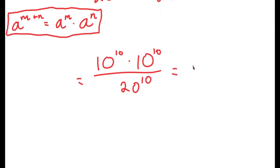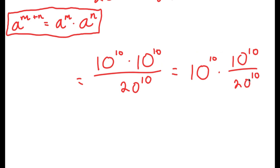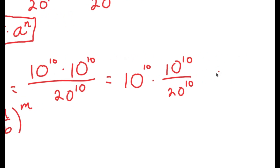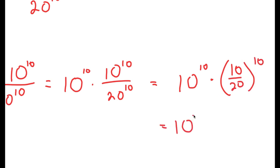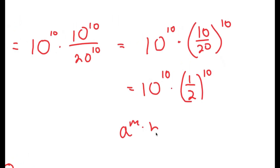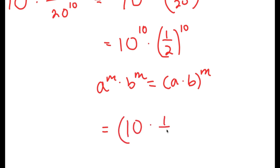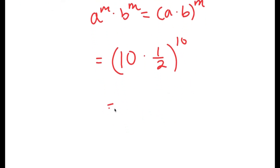This can be written as 10 to the power of 10 times 10 to the power of 10 over 20 to the power of 10. I grouped 10 to the power of 10 over 20 to the power of 10 to use the property a to the power of m over b to the power of m equals a over b to the power of m. This turns into 10 to the power of 10 times 10 over 20 to the power of 10, which equals 10 to the power of 10 times 1 half to the power of 10. Using a to the power of m times b to the power of m equals a times b to the power of m, this becomes 10 times 1 half to the power of 10, which equals 5 to the power of 10.